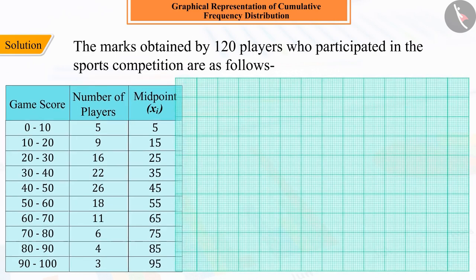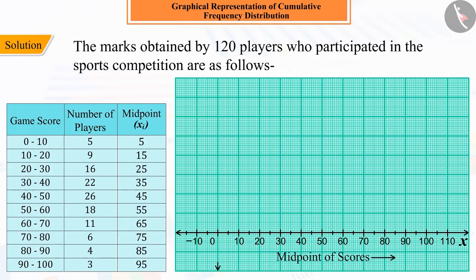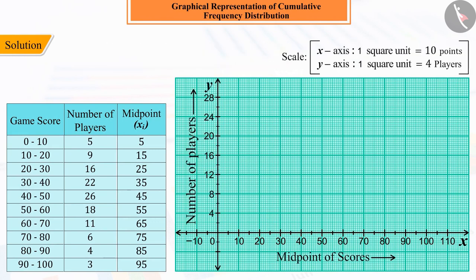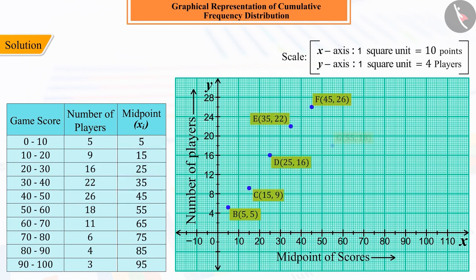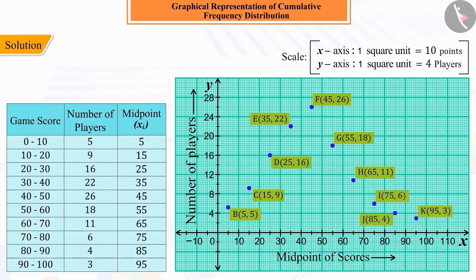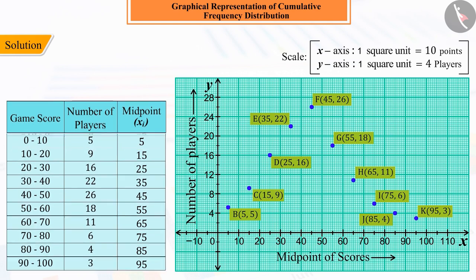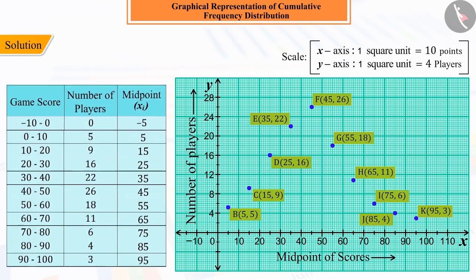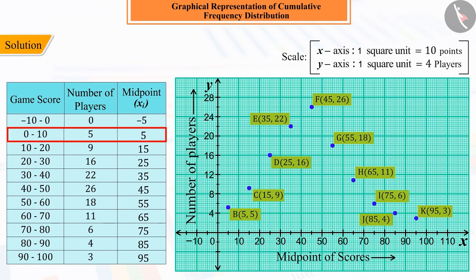Now, plot the midpoint on the x-axis and the frequencies on the y-axis. Plot the corresponding points B, C, D, E, F, G, H, I, J, and K of the ordered pairs obtained from the above frequency distribution. Keep in mind that point A represents 0 frequency, which comes in the class interval minus 10 to 0, just above 0 to 10, and the midpoint of that interval is minus 5.